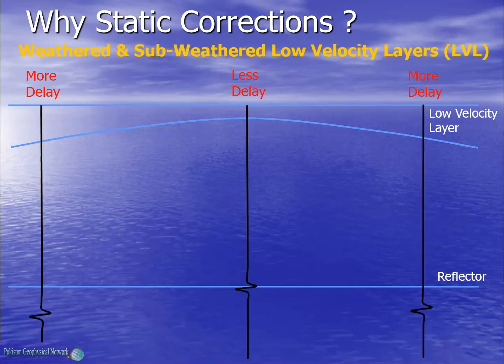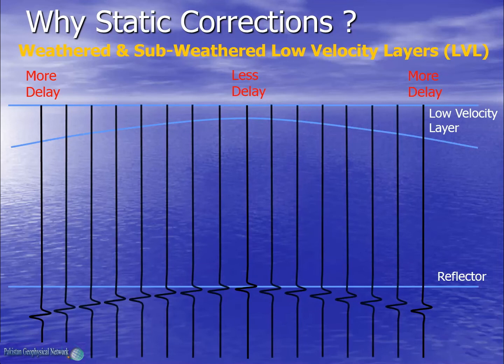These would be the seismograms for these reflecting events. And if we fill the in-between portion we will get a seismic section. As we can see our reflector is flat but in the seismic section we are getting an anti-climb structure which is due to the weathered layer. Thus we are not getting the true subsurface geometry of the reflector in the seismic image. We need to compute weathered layer statics to remove this effect.